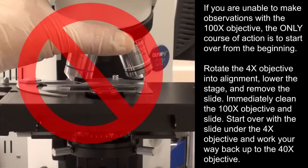Rotate the 4x objective into alignment, lower the stage, and remove the slide. Immediately clean the 100x objective and slide. Start over with the slide under the 4x objective and work your way back up to the 40x objective.